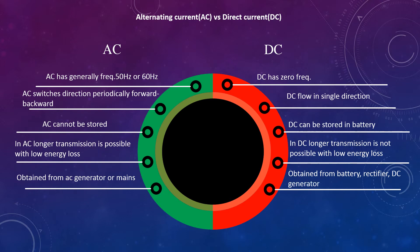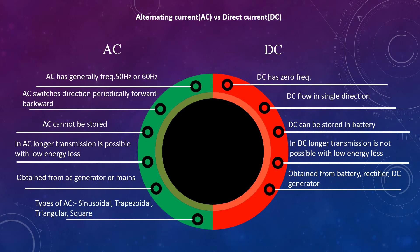Types: Sine wave, triangular wave, and square wave are types of alternating current. Direct current is in the form of pure and pulsating DC.